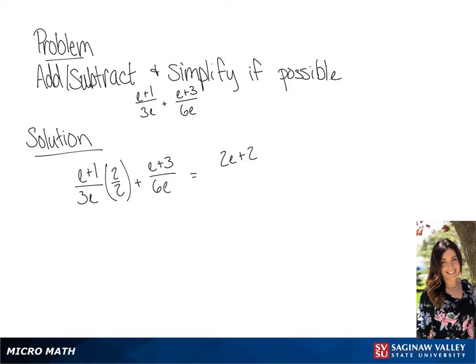Giving us (2e + 2) all over 6e, plus (e + 3) all over 6e. And we will get an answer of (3e + 5) all over 6e.